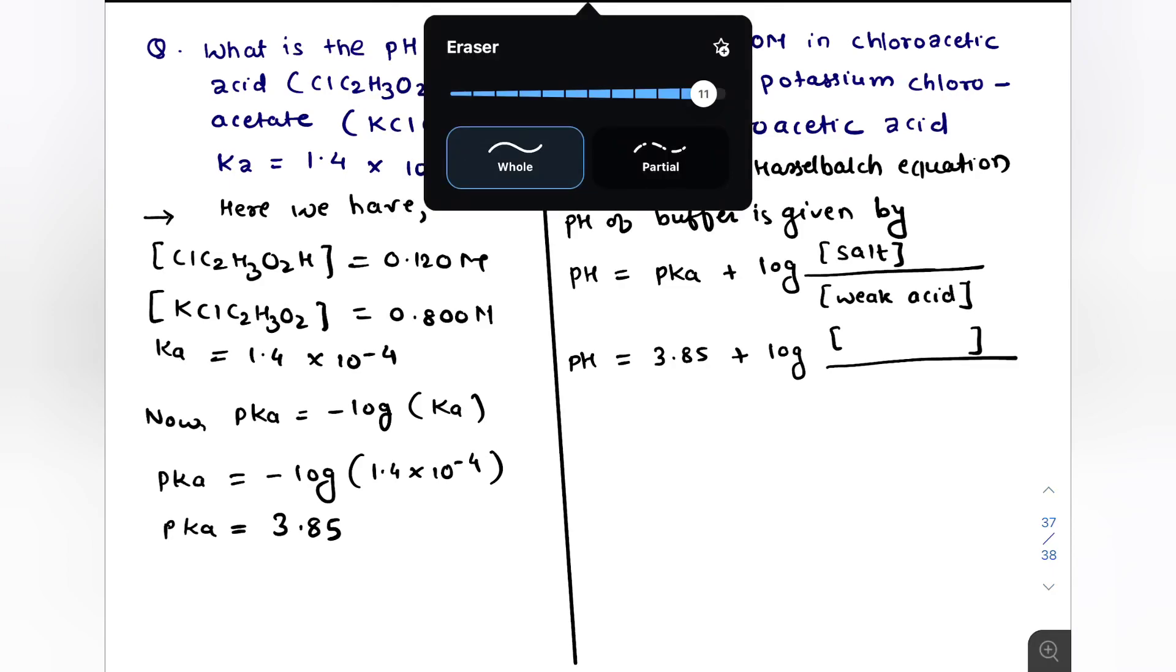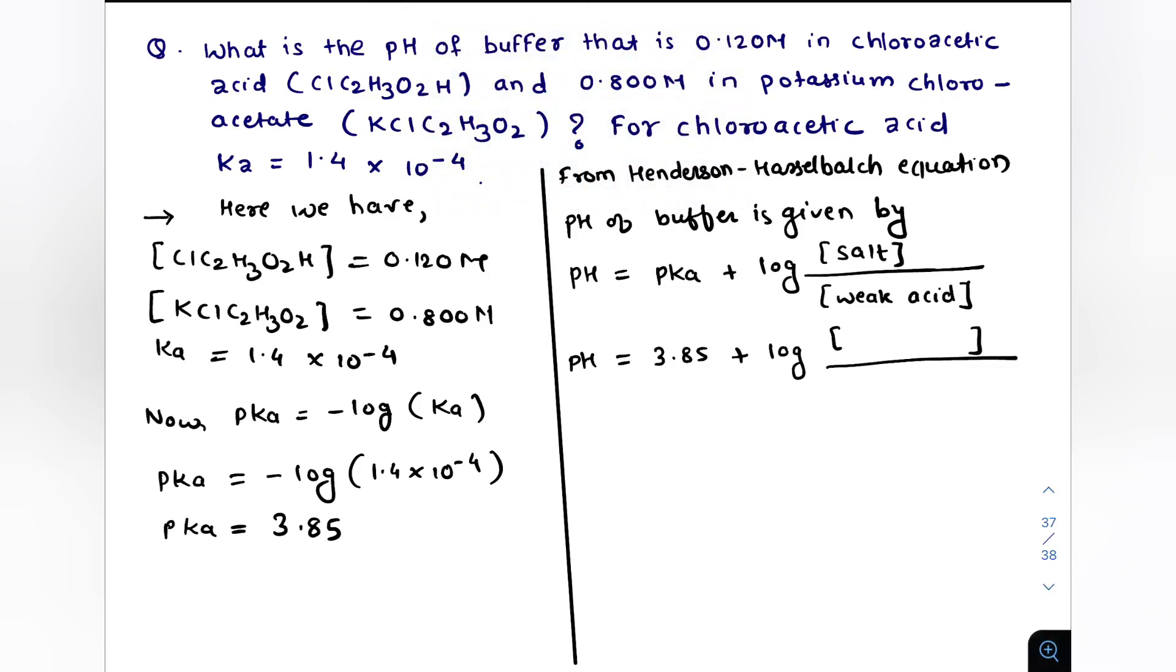So pH equals 3.85 plus log of concentration of potassium chloroacetate divided by chloroacetic acid concentration. So we can write 3.85 plus log of 0.80 divided by 0.120.